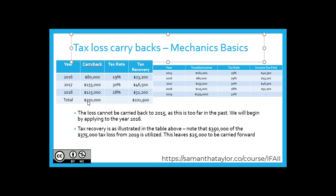So how do we get to $350,000? That's simply our 2016, 2017, and 2018 taxable incomes summed up. We take the taxes paid for each one of those years, apply our $375,000 tax loss, and that's how we generate our tax recovery or tax refund utilizing these tax loss carrybacks.